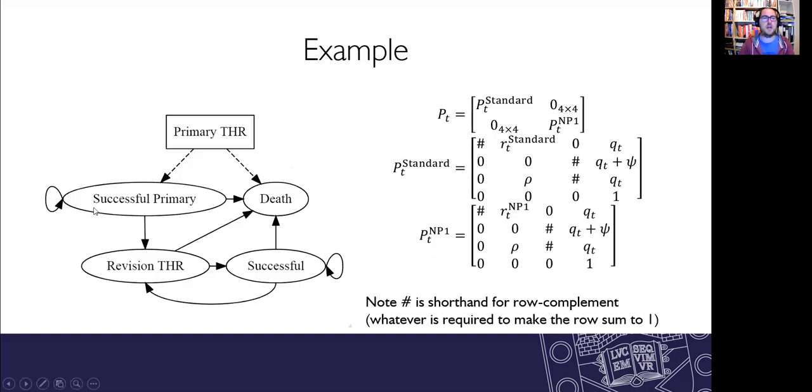This model has four states. So a successful primary hip replacement or when somebody needs a revision operation that's the revision THR and then there's a successful revision state following a successful revision. Those operations can have more operative mortality however and also people can die from other causes. So here's the transition probability matrix up in the top right and you will notice that rather than being a four by four transition probability matrix it's actually an eight by eight and that's because we've taken the Markov models for the two cohorts so the standard and the NP1 cohorts and we've combined them into one Markov model but there's no way for those cohorts to interact.